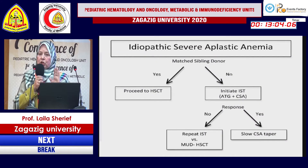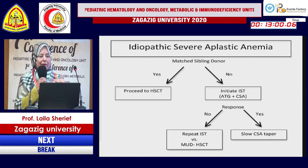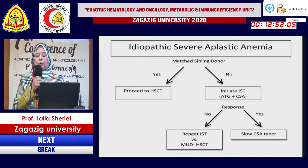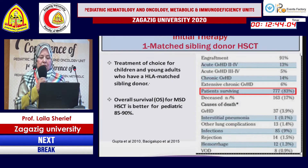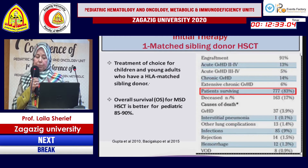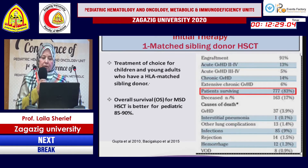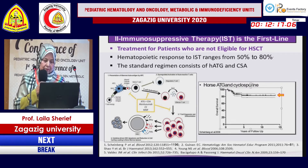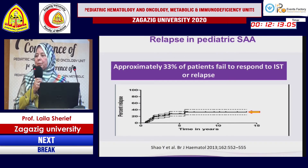For severe aplastic anemia, the first approach is a matched sibling donor transplant. If available, this is the best and definitive line of treatment, with European trial data showing overall survival of 83% and up to 90% in pediatric patients. If no matched sibling donor is available, immunosuppressive therapy with ATG and cyclosporine is used, achieving response rates up to 80%. Unfortunately, one third of patients may relapse after immunosuppressive therapy.